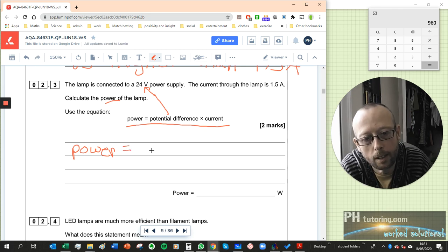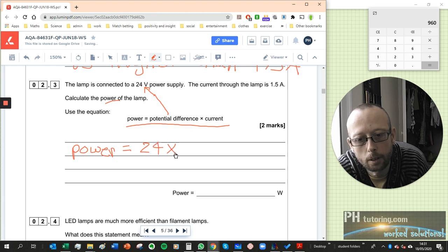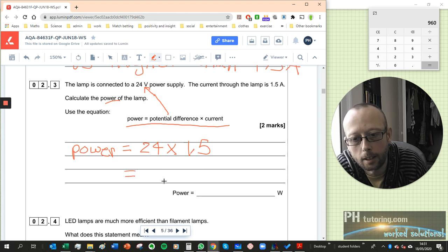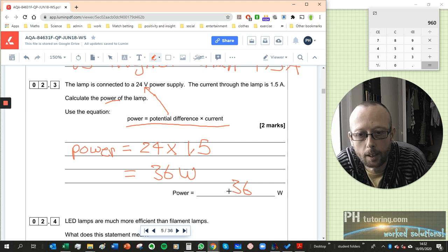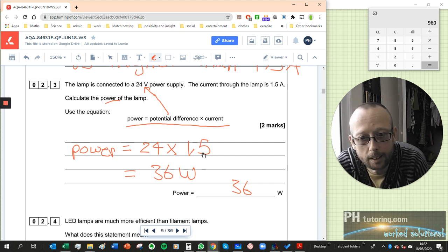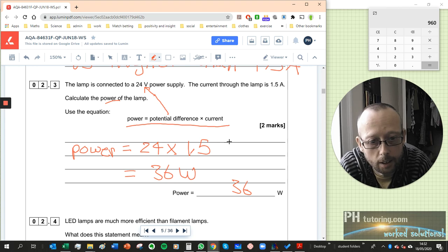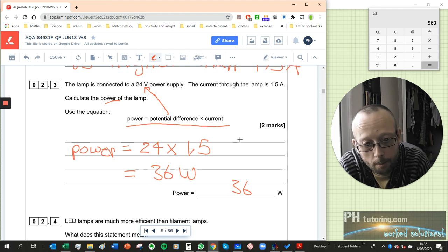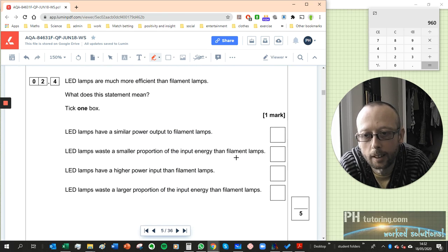So you're just going to do 24 times 1.5, so 24 times 1.5 ends up being 36 watts, and they've given you the unit there. Okay, again I'm not going to go into what power is, I'm going to think we don't need to know what power is for this question. I'm not teaching you the subject at the moment, I'm just teaching you how to answer this question. If you want to learn about power you can watch some of my other videos if they're available yet, or you can contact me for tuition.